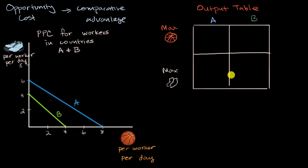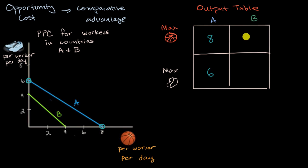Now let's work this together. In country A, if they put all of their energy into basketballs, we are right over here on the production possibilities curve — they can produce eight basketballs. And if they put all of their energy into shoes, they produce no basketballs and six pairs of shoes. Similarly, in country B, if they put all their energy into basketballs, they get four basketballs and no pairs of shoes. But if they put all the energy into pairs of shoes, they produce no basketballs and four pairs of shoes. The output table simply shows the extremes from the production possibility curves for these countries.